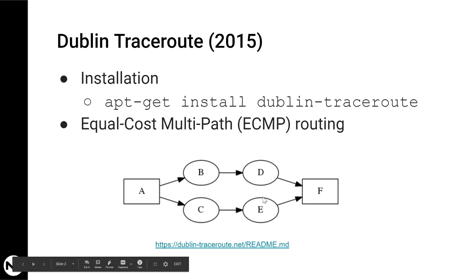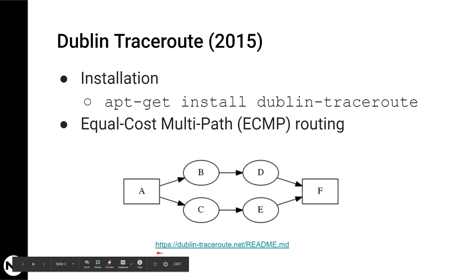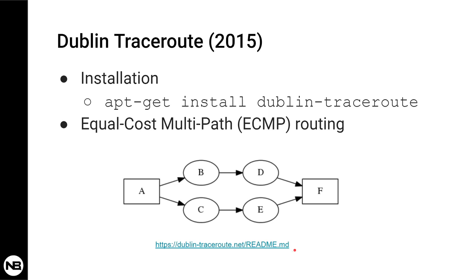This is a utility that's been around for around five years and you can find it easily in public repositories, so you will be able to install it on Debian-based Linux with apt-get install dublin-traceroute. However, I would recommend installing it from source to get the latest bug fixes and features. For more information about installation, go to the Dublin traceroute website.